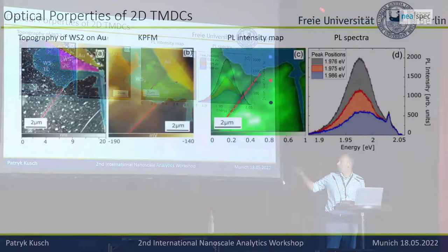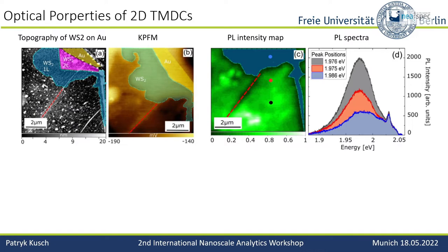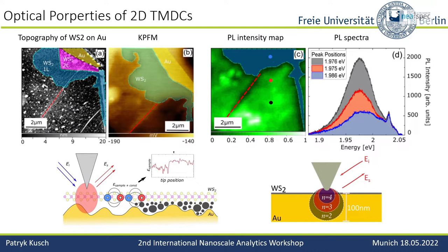We have one area — one monolayer — that is very strongly stuck to the gold, and another area that is more away from the gold. The result in PL is quenched PL, a low signal coming from the area that is really stuck. Where it is somehow away from the gold, the PL is unquenched, a bit shifted, and pretty strong. Mapping the PL intensity as a function of laser position gives a nice spatial image.